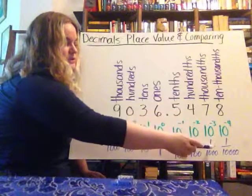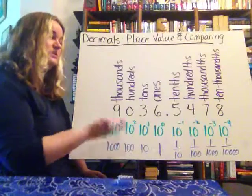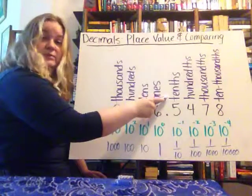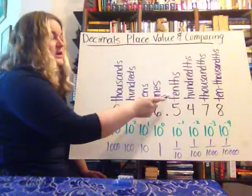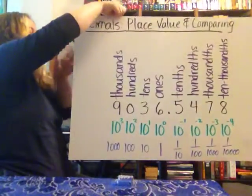And then ten to the negative three would be one thousandths, which is why that's the thousandths place, and so on. So as we take a look at this, again, keeping in mind that the thing that trips a lot of people up is there's no oneths place. And so that is because we don't have a power of ten that would correspond to that.